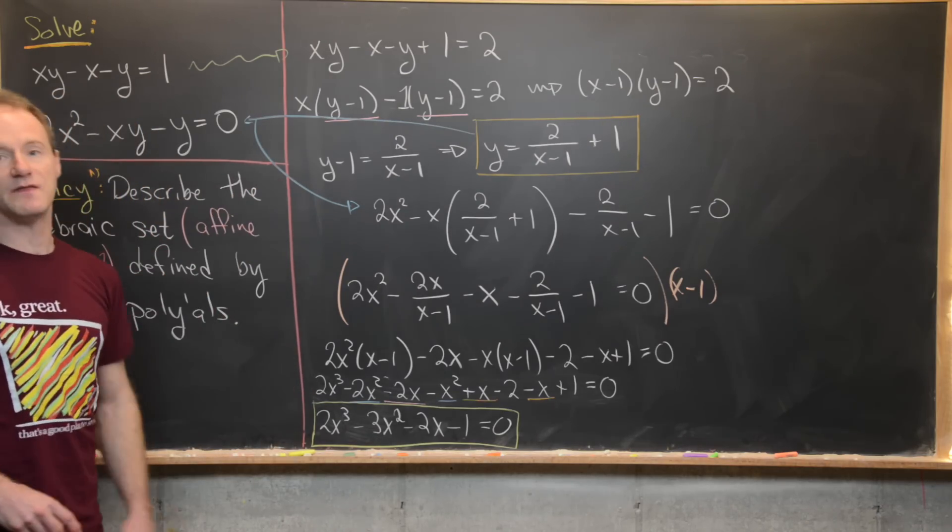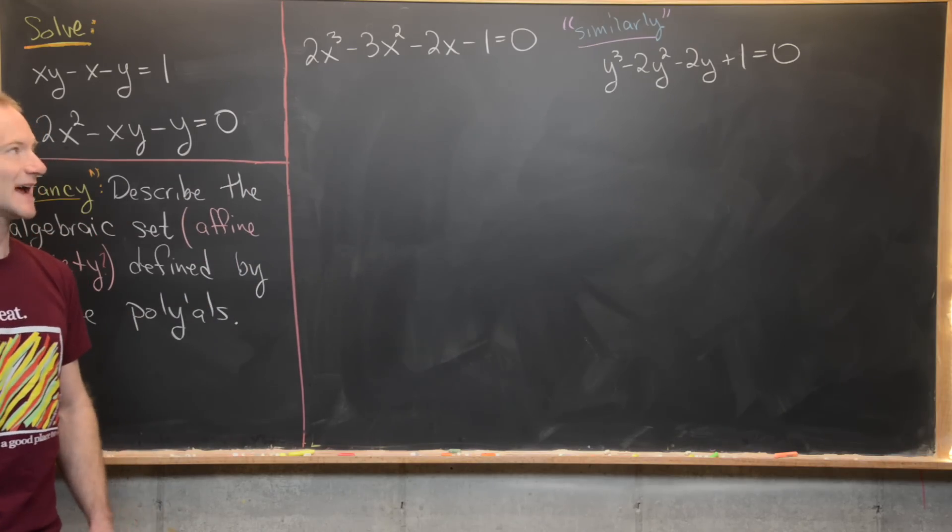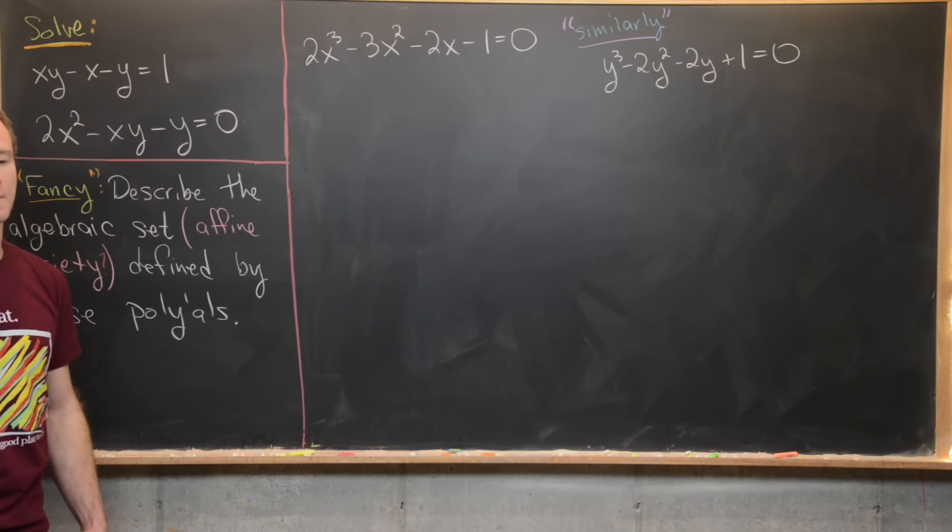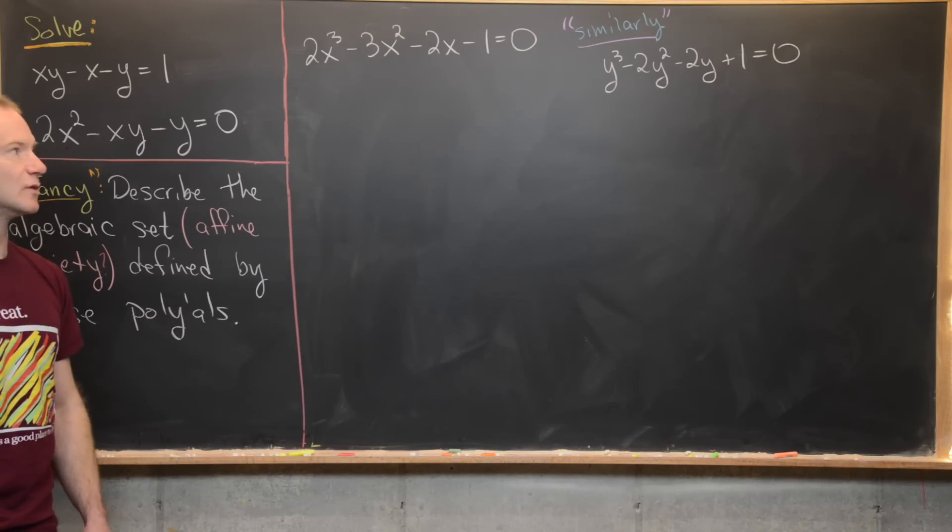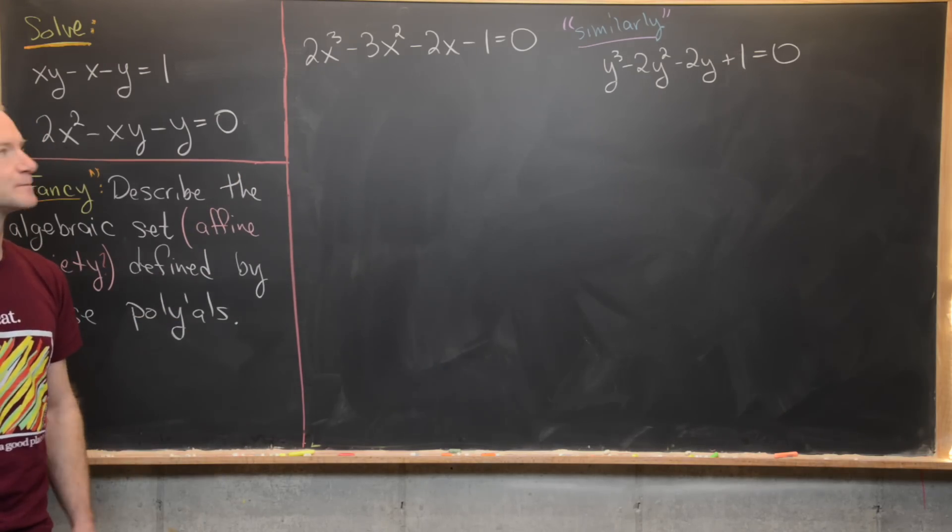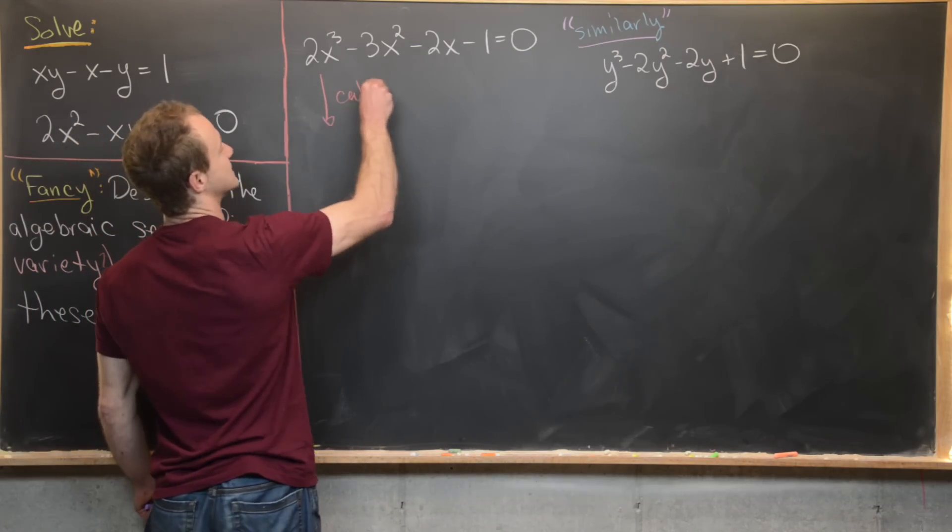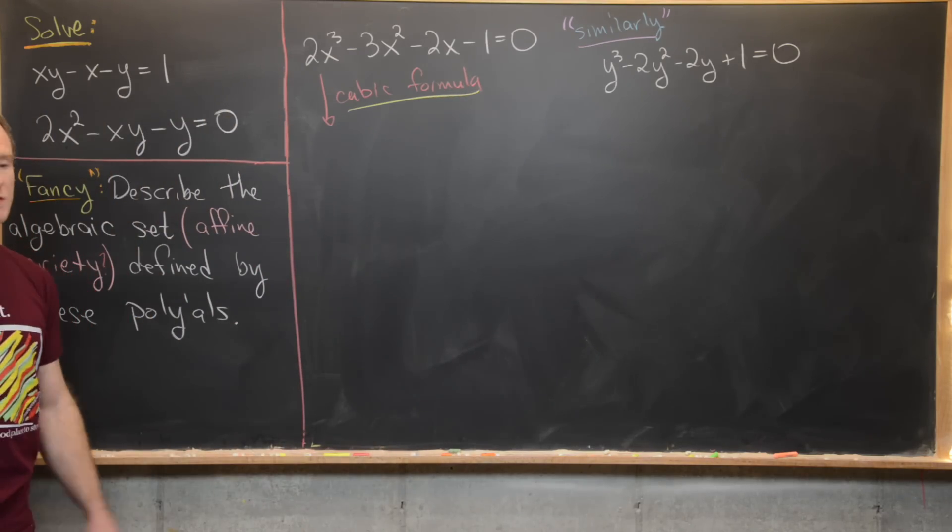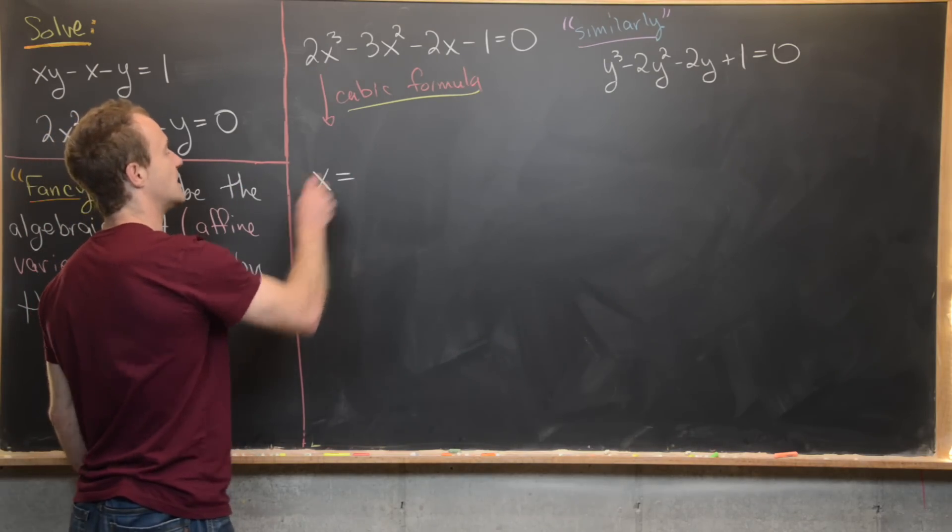Alright, let's go ahead and bring that up. And then we'll find the x value. Okay, on the last board, we derived a cubic polynomial that x must satisfy. So it was 2x³ - 3x² - 2x - 1. And I want to point out by very similar methods, we can get a cubic polynomial that y must satisfy. And that's y³ - 2y² - 2y + 1. So now we'll use the cubic formula on this. So let's just point out that here we're using the cubic formula that was on the first board. So I won't recall that. And I also won't do all of the arithmetic calculations. But I will say that this is going to give us the following value of x.